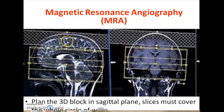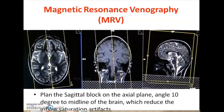A very important thing is that you have to place the saturation band over the planning area. This is the scanning region of interest, and this is the saturation band area. This saturation band has to be applied above the region of interest to avoid signals from venous flow. Similarly, for the MRA venogram, this should be planned in the axial plane and in a sagittal plane with a 2D TOF or phase contrast study.